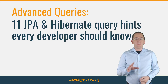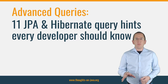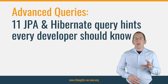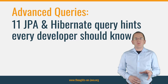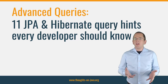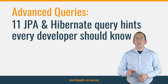JPA and Hibernate support a set of hints which you can use to provide additional information to your persistence provider to influence the execution of a query. You can use them for lots of different things like setting a timeout for your query, using an entity graph, or defining the caching of a query result.